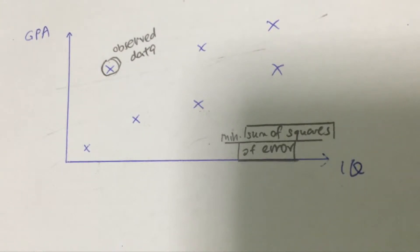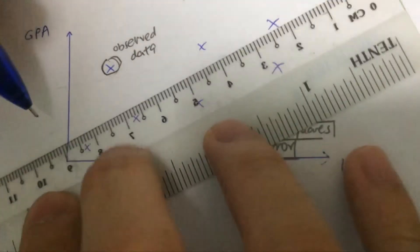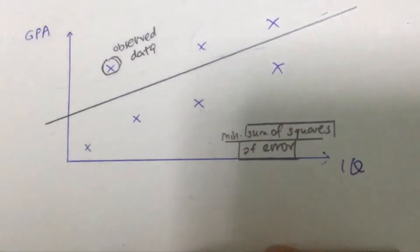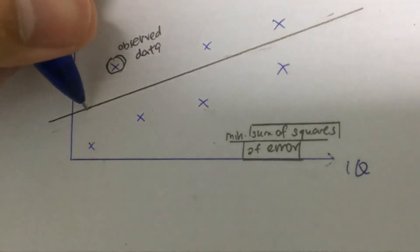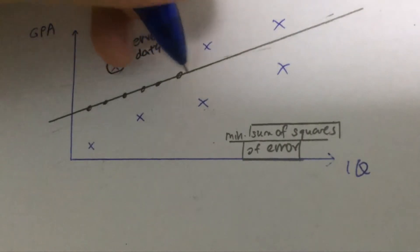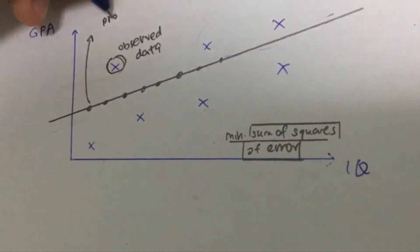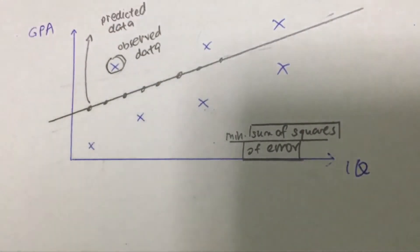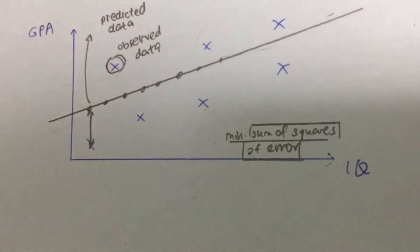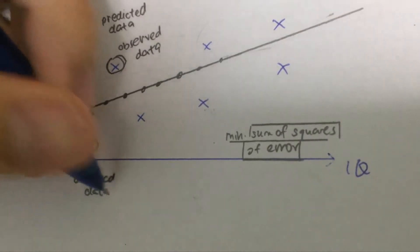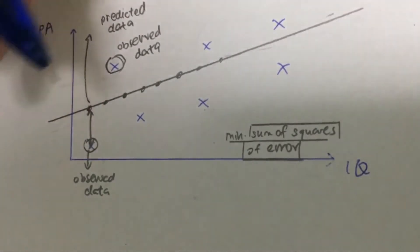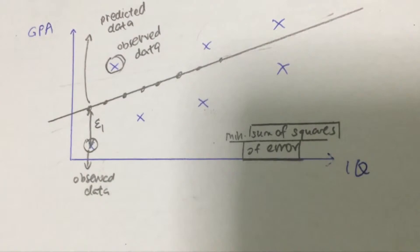So what do we mean by finding the minimum sum of squares of error? Let's say I have a particular model. What I will do is calculate the vertical distance between the predicted value and the observed data. The points on the line — the model itself — are what we call the predicted data. We calculate the difference between the predicted data and the observed data, and we call this E1, where E represents the error.